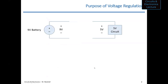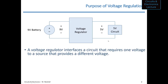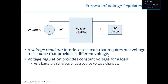For example, if you have a nine-volt battery it produces nine volts nominally, and that varies as the battery discharges. If you have a five-volt circuit — maybe a microcontroller or your infrared tester circuit — the voltage regulator goes in between and maintains a specified output voltage based on a higher (or possibly lower) input voltage. A voltage regulator interfaces a circuit that requires one voltage to a source that provides a different voltage, providing a constant voltage for a load.